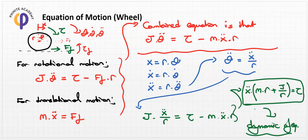This is the complete dynamic equation of the wheel system. In the next lesson, we will create a transfer function and system dynamics model - in particular, the state space presentation form of this wheel model will be covered.